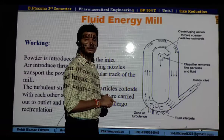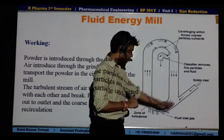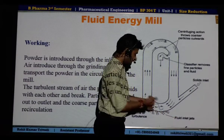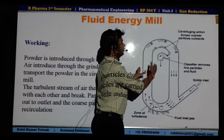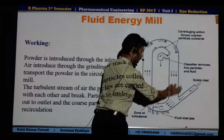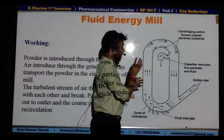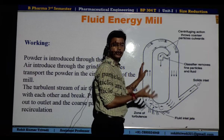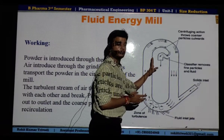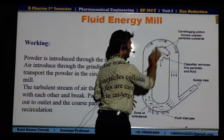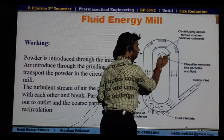The solid material is introduced through the inlet, and with that solid material there is a flow or blow of high-speed air. That high-speed air takes the solid material inside the tube, and the solid material keeps on rotating inside the tube. Due to centrifugal force, the heavy particles move towards the outer surface and the light or small particles move along the inside layer. Ultimately, the small-size particles fall inside the classifier.